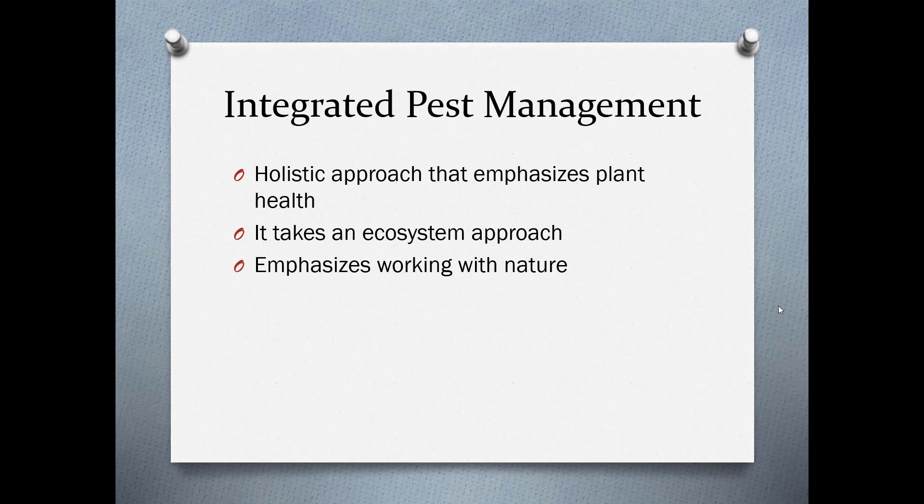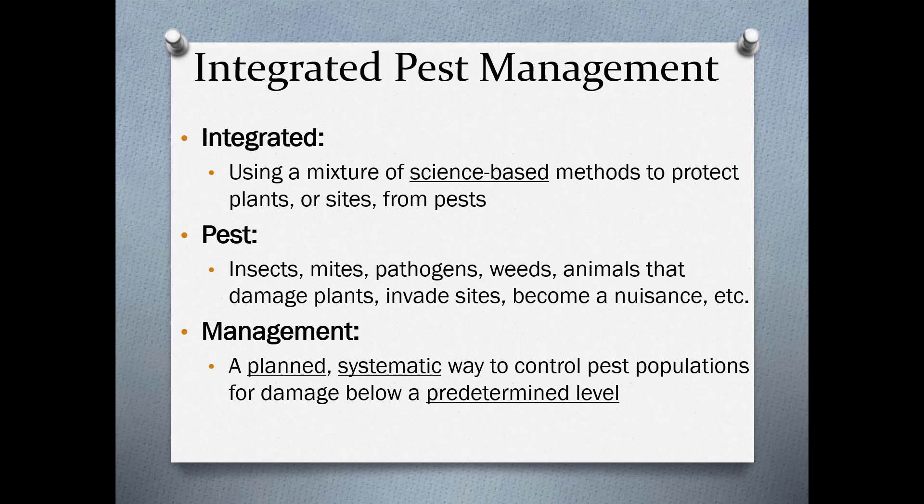Integrated Pest Management is a holistic approach that emphasizes plant health. It takes an ecosystem approach and emphasizes working with nature. It's integrated because it uses a mixture of methods, and these should be science-based to protect the plants or the sites from pests. A pest can be anything—insects, mites, pathogens, weeds, animals, etc.—anything that becomes a nuisance or causes damage to your plants. Management is a planned, systematic way to control pest populations for damage below a predetermined level.